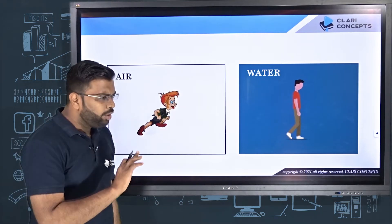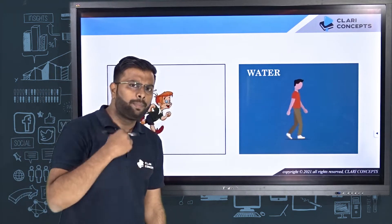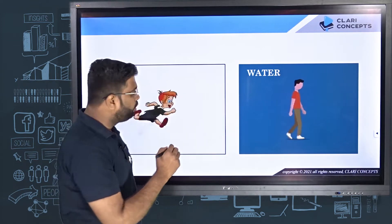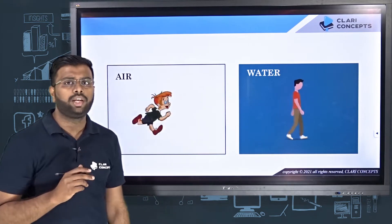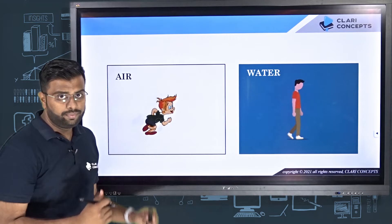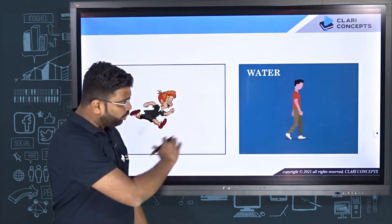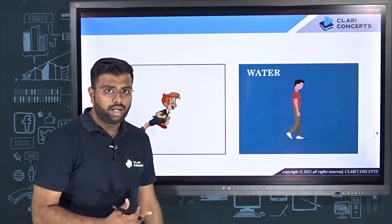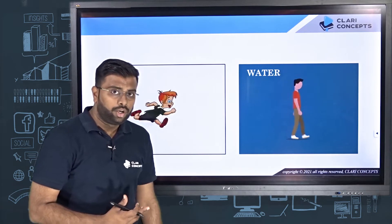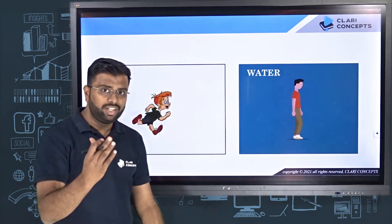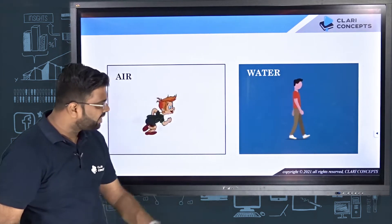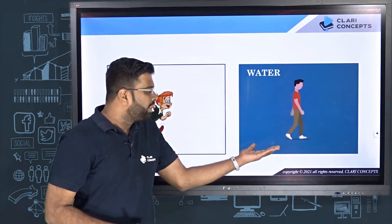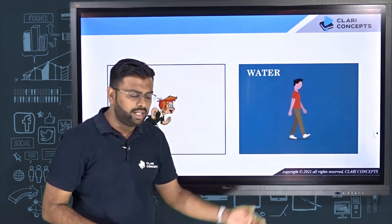Now can you imagine the difference of efforts that you need to apply when you run in water in comparison to when you run in atmospheric air, or on the road? In which of the two cases will you need to put more effort to run at the same speed? Obviously, you will say that in case of water, when you're running in the pool, you need more and more effort.